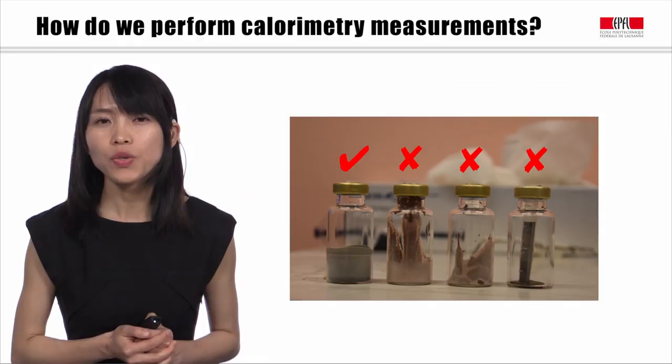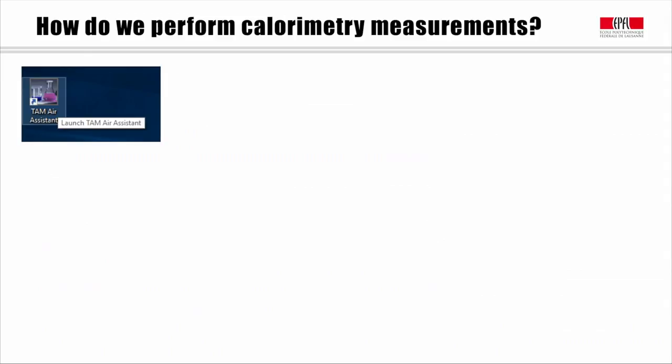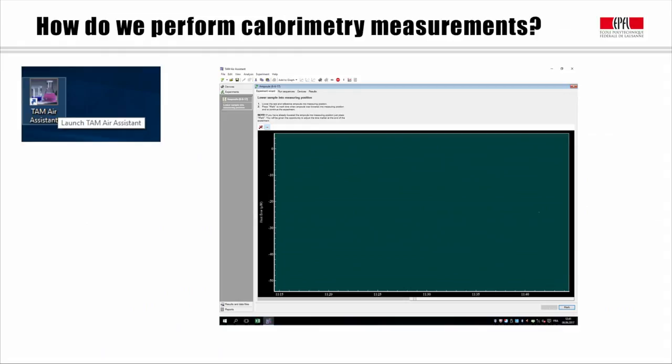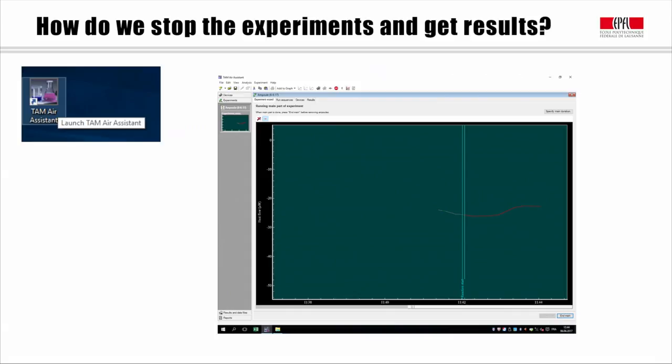Now our experiment is going on. We can use the experimental wizard to check how the experiment is going. When the experiment finished, we need to do the final baseline. Principally, it is the same as the initial baseline and there is another wizard that will guide you for all the steps. Just remember, before you do the baseline, you need to take out the sample but leave the reference inside.